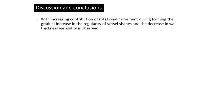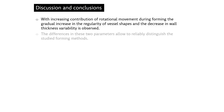The results of the analysis of the pilot experimental dataset show a promising potential to quantify phenomena related to pottery forming — topography and wall thickness variation. As predicted, with increasing contribution of rotational movement during forming, a gradual increase in the regularity of vessel shapes and a decrease in wall thickness variability is observed. The differences in these two parameters allow reliable distinction of the studied forming methods.